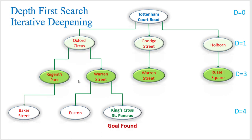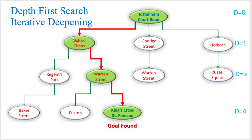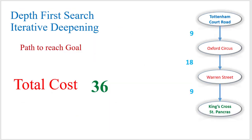Now we find out that our next reachable is our goal state, so we stop the algorithm and print out the shortest path. We reached our goal at depth four, and we highlight the shortest path from the source. Using this path we found our goal, and we print out the shortest path — this is the total cost.